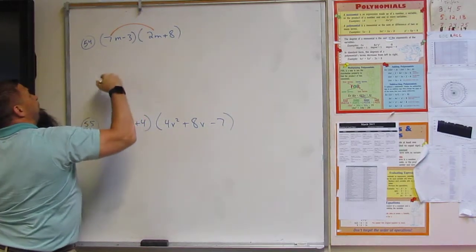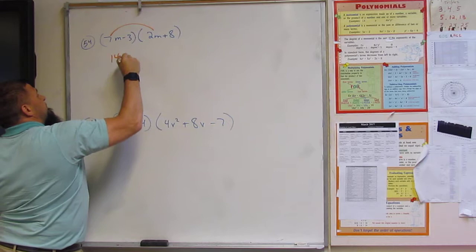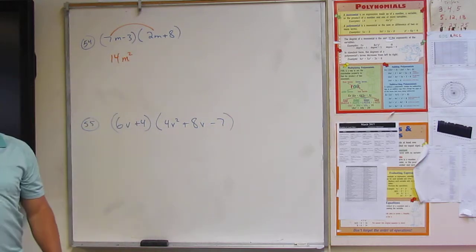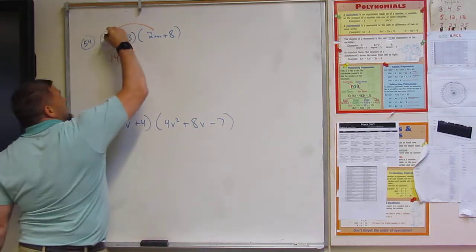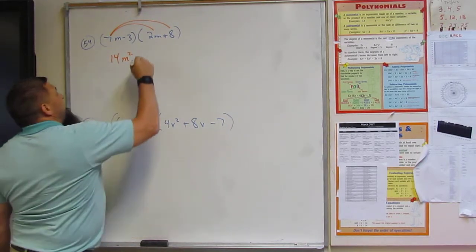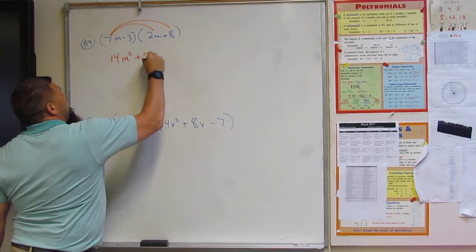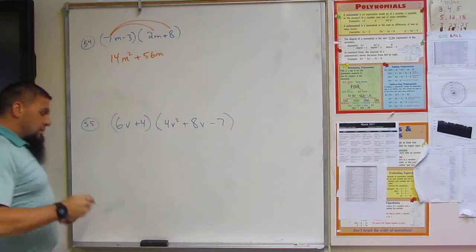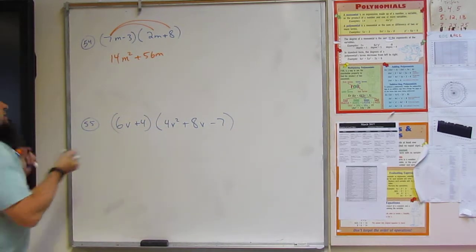So what's 7 times 2? 14p. And m times m? m squared, right? Then what's 7m times 8? 56. 56m? All right. And then we do the same thing with this guy.